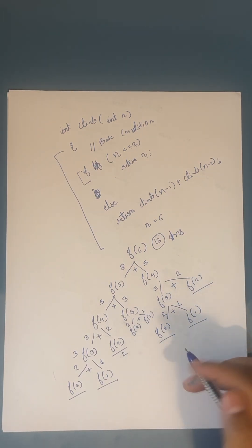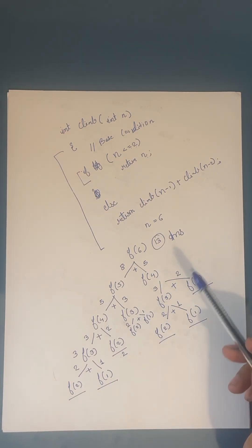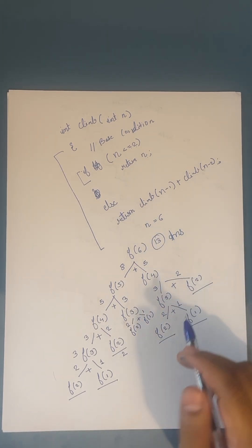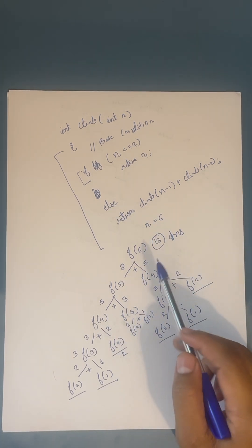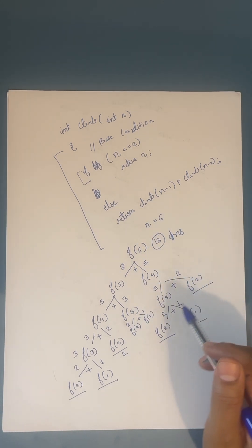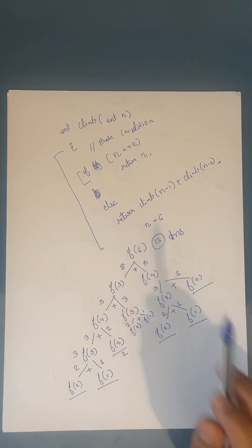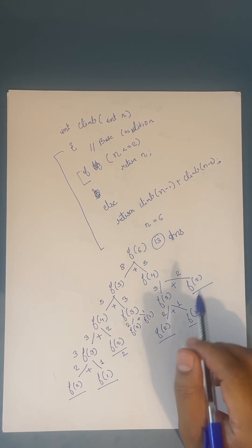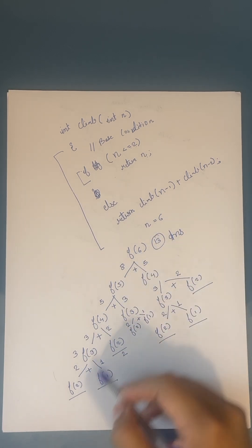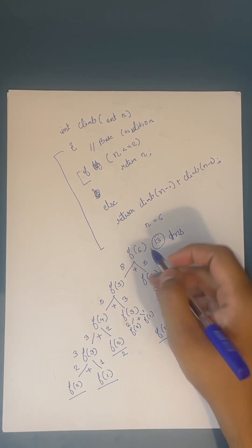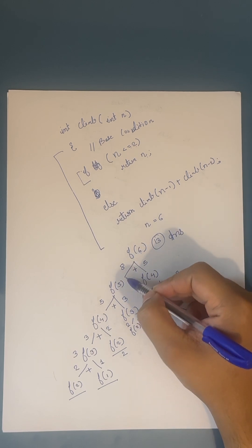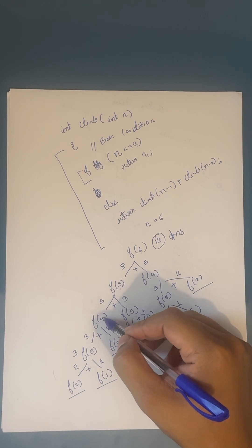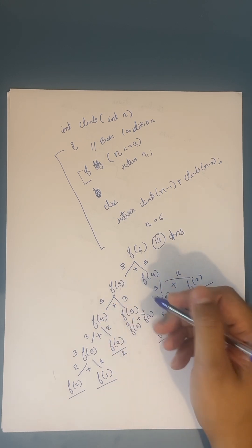In the last submission, we had the recursive tree for the climbing stairs problem and the time limit got exceeded. The solution was correct but why did it happen? If you see the recursive tree, to calculate f(6) we actually calculated f(5) and f(4), and to calculate f(5) we again calculated f(4).